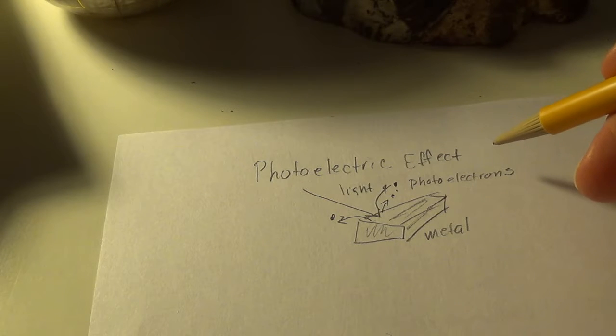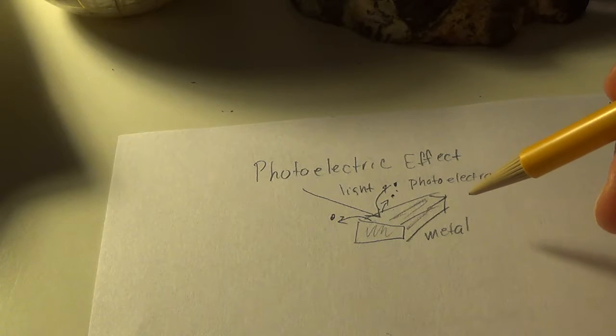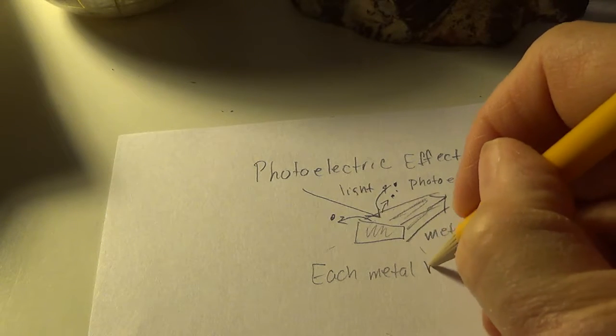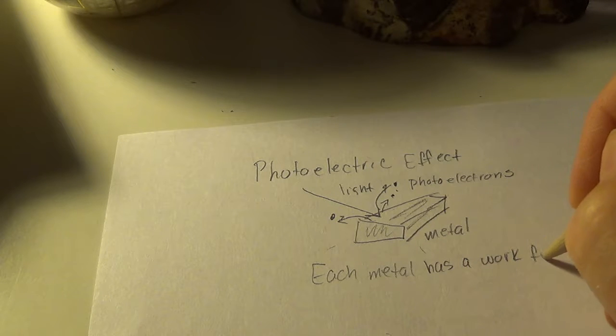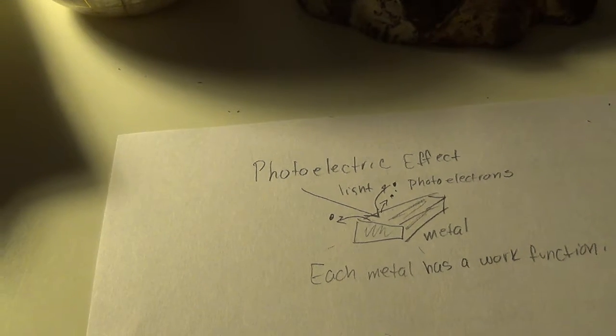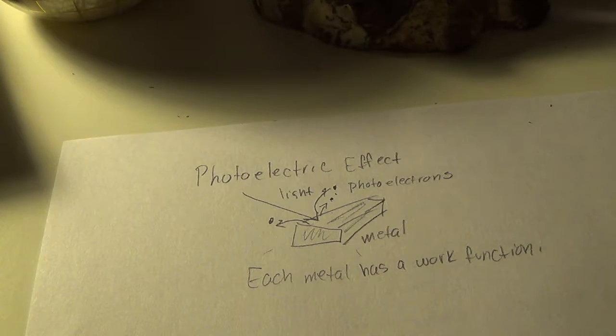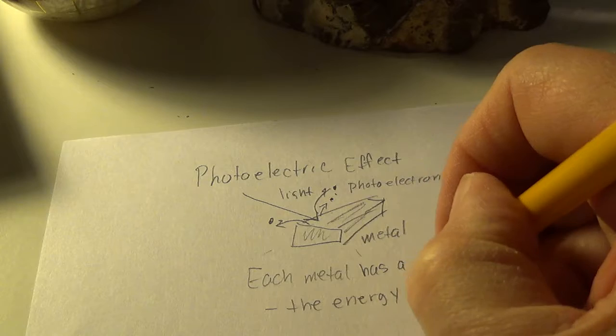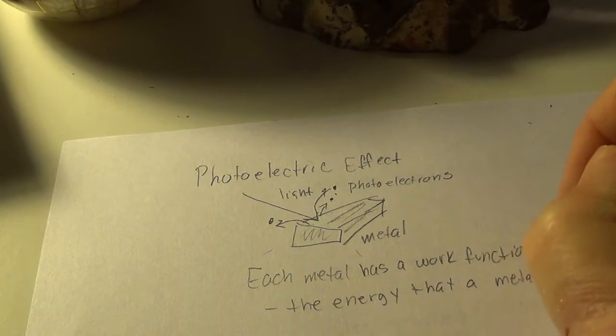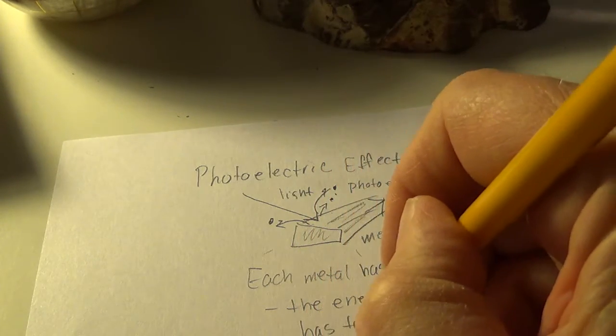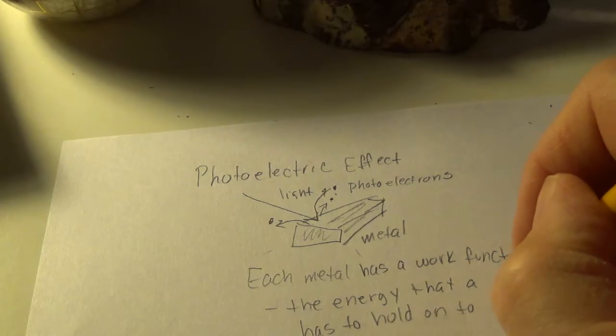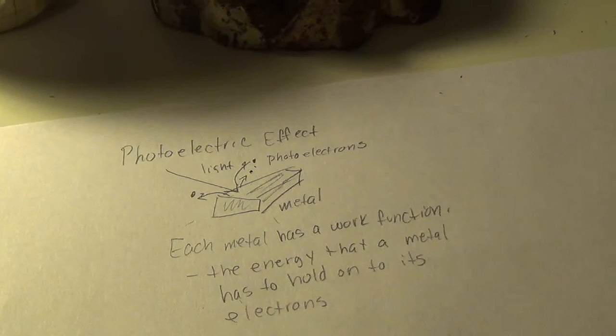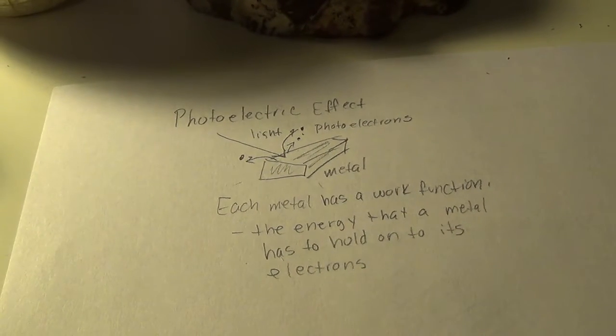So, and the whole thing is called the photoelectric effect. Each metal has a work function. A work function is a number. And it is the energy with which a metal holds on to its electrons.